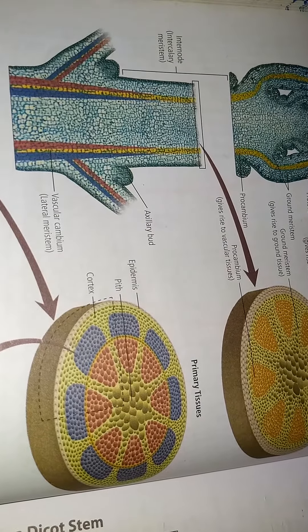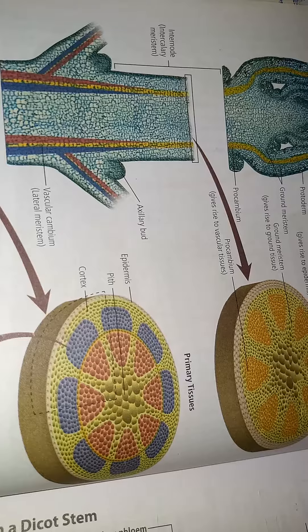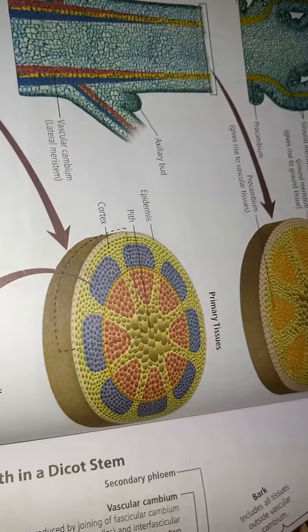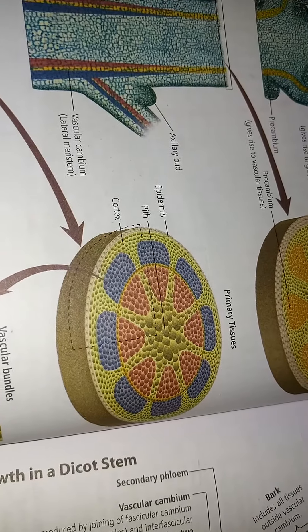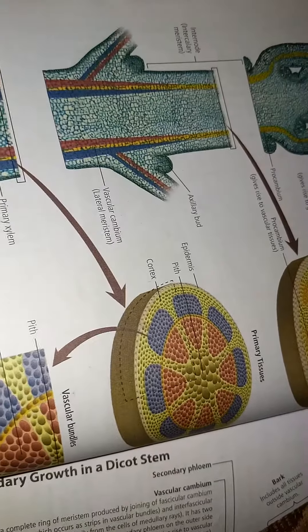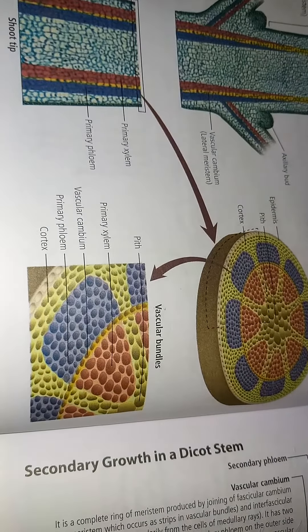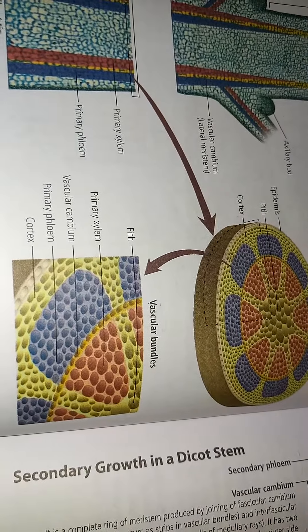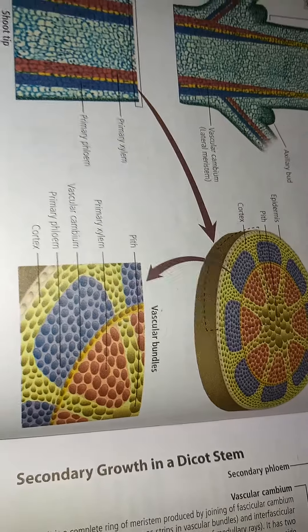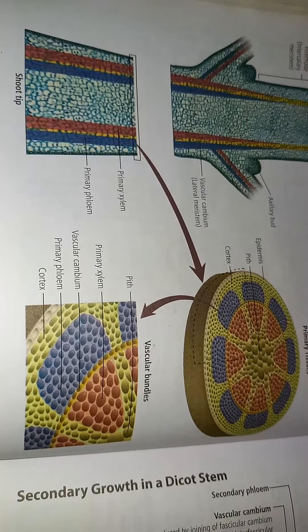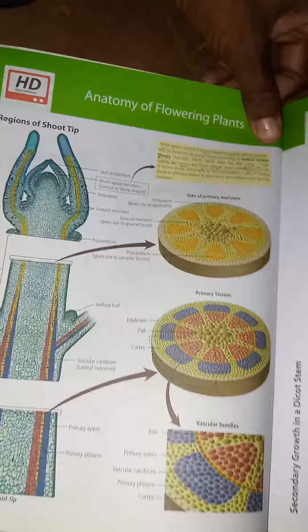The internodal primary meristem system is part of an axillary bud. Vascular cambium is found in the epidermis-based cortex. The alternate vascular cambium is in the epidermis based in the full xylem properly. Alternate vascular bundles consist of: primary xylem, vascular cambium, primary phloem, cortex, and both primary xylem and primary phloem.